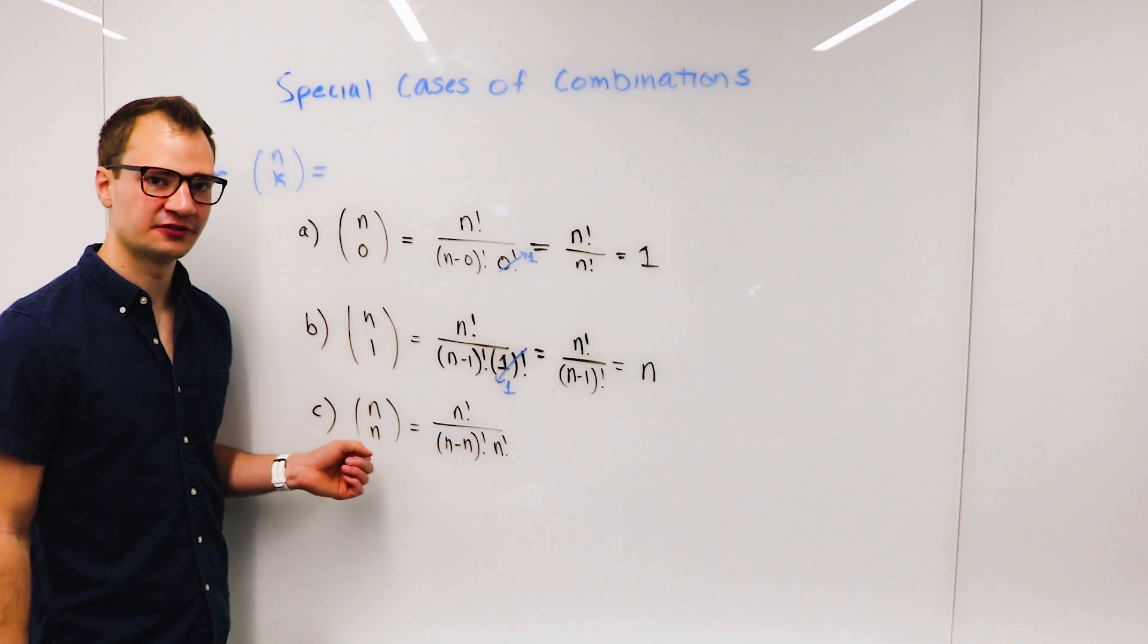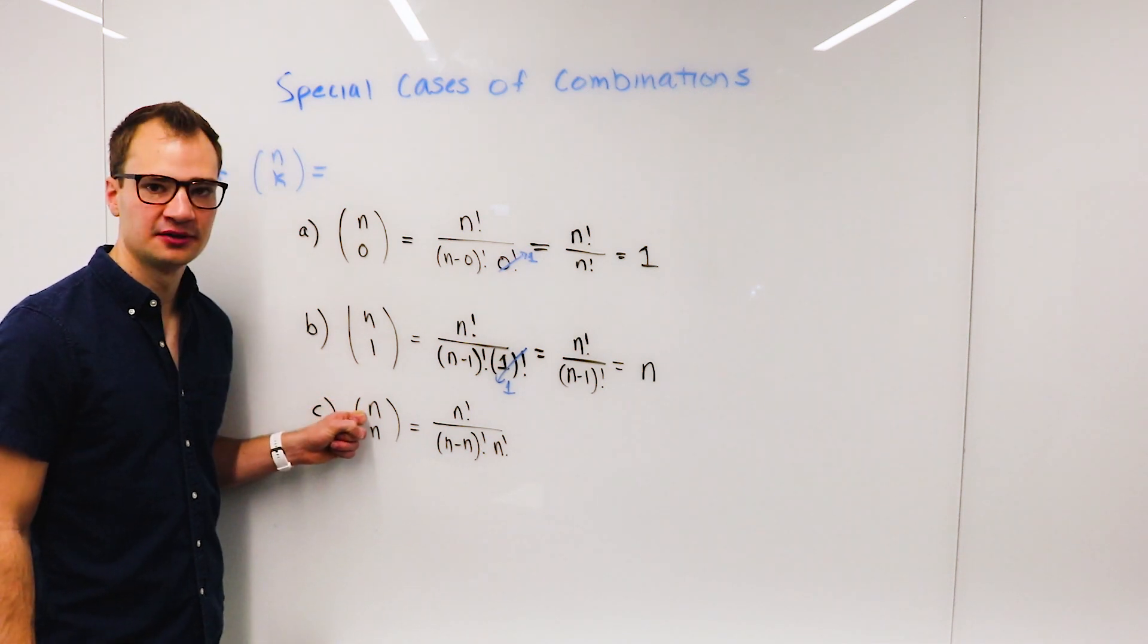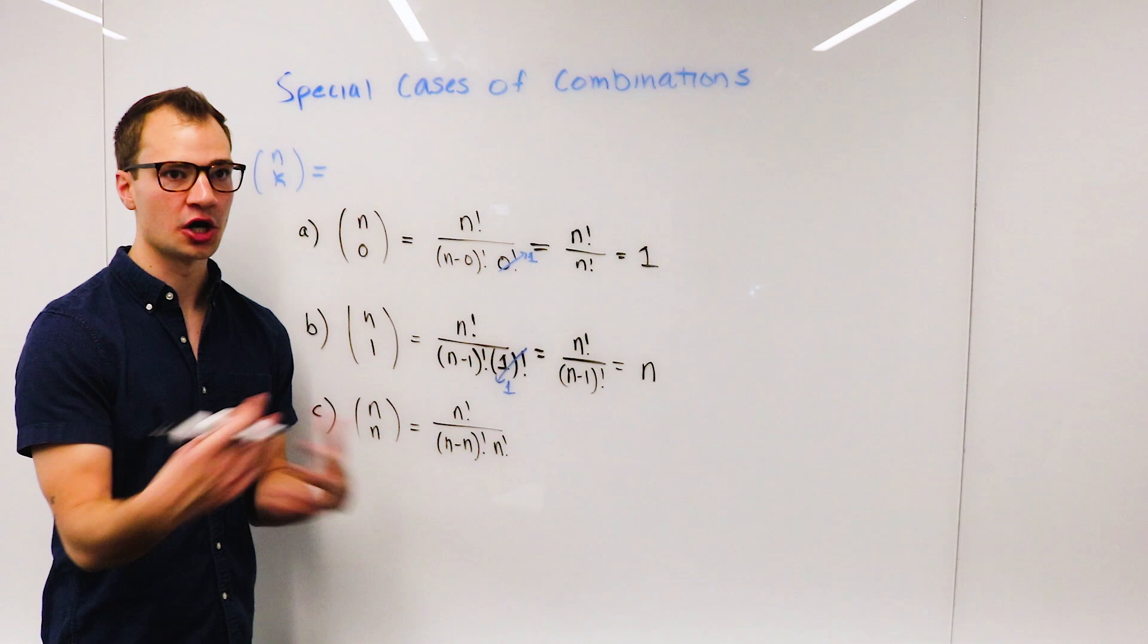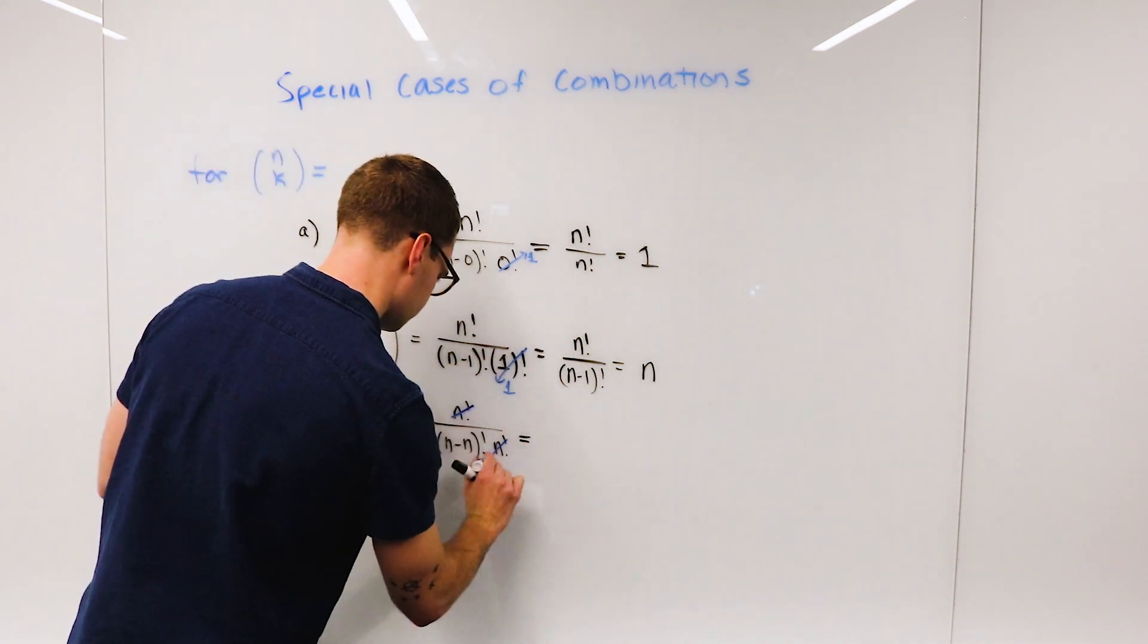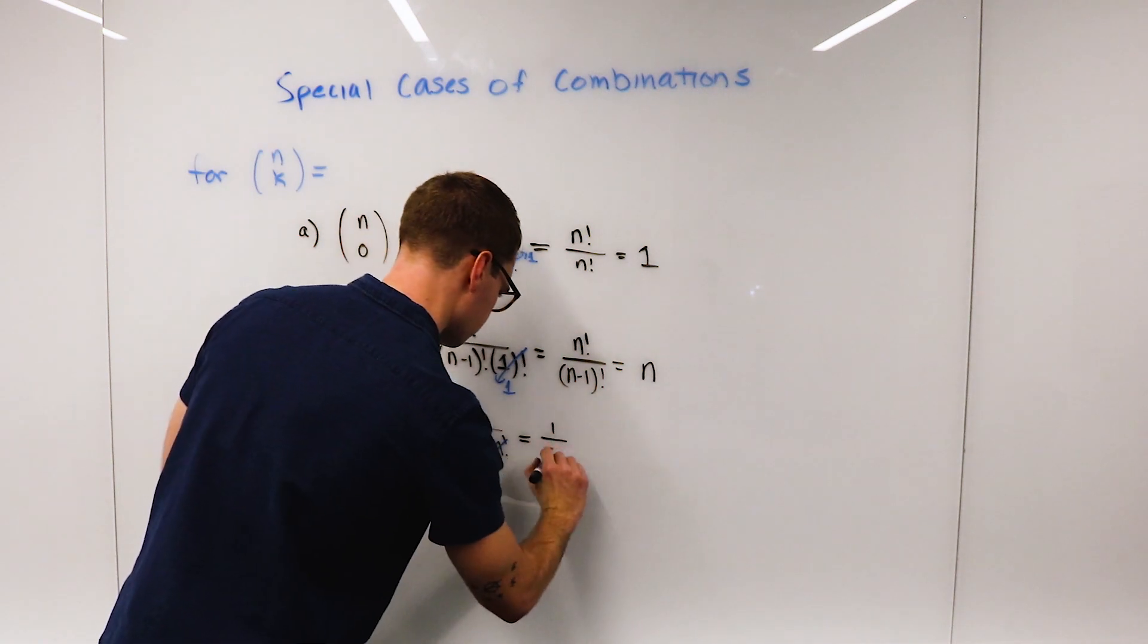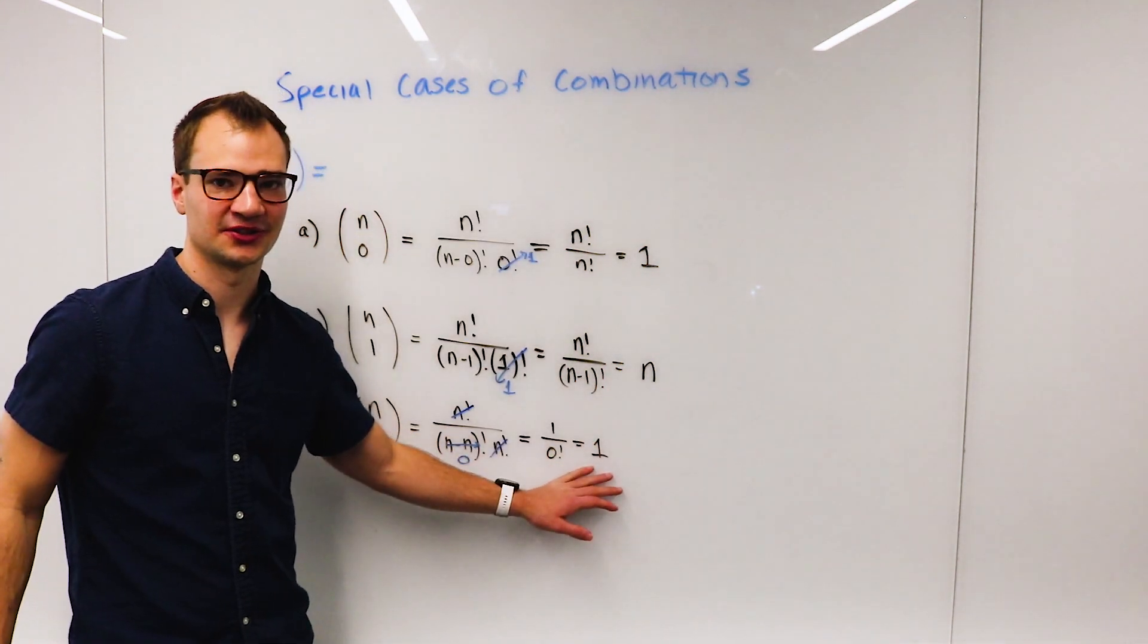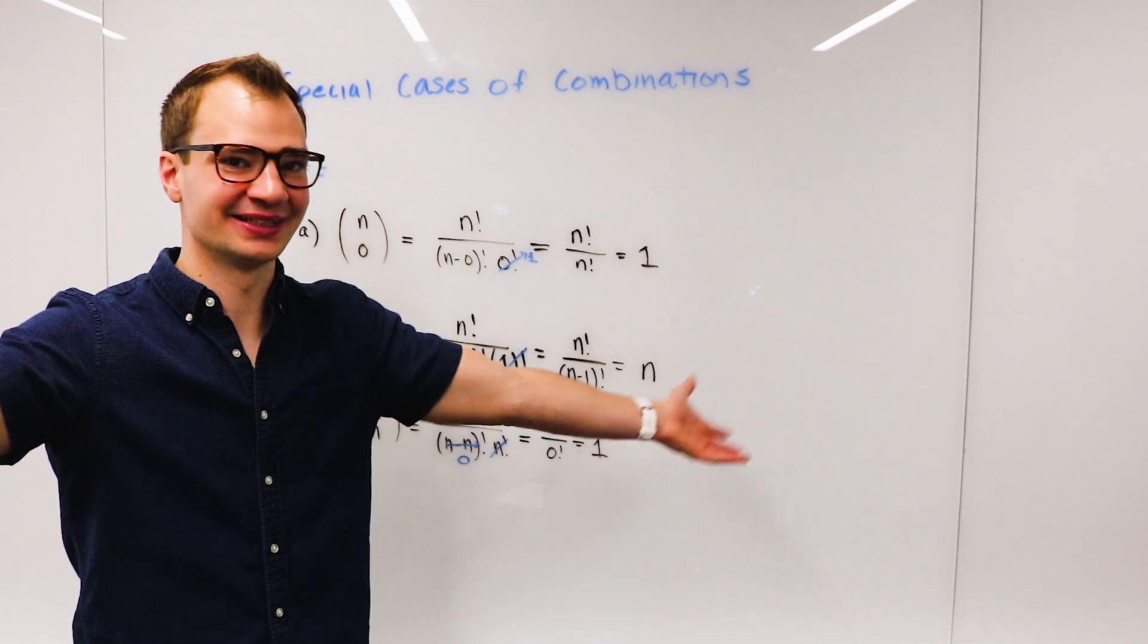And finally, if we have a committee of n positions and we choose n candidates, that is all of them get on the committee, there's only one way in which this can occur: everybody gets on.